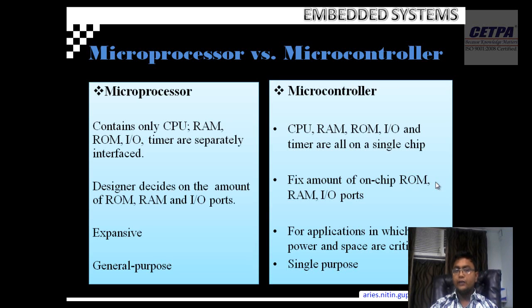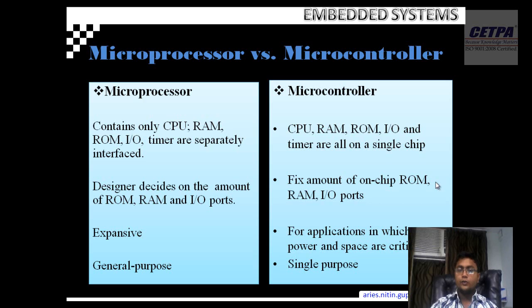One benefit of the microprocessor is that you can change the amount of RAM, ROM, and the number of ports with the processor design. But in the case of the microcontroller, since it is an integrated chip, you cannot change this. So for general-purpose systems, microprocessors are more suitable, but for a single task or a set of tasks — like embedded tasks — microcontrollers are better.